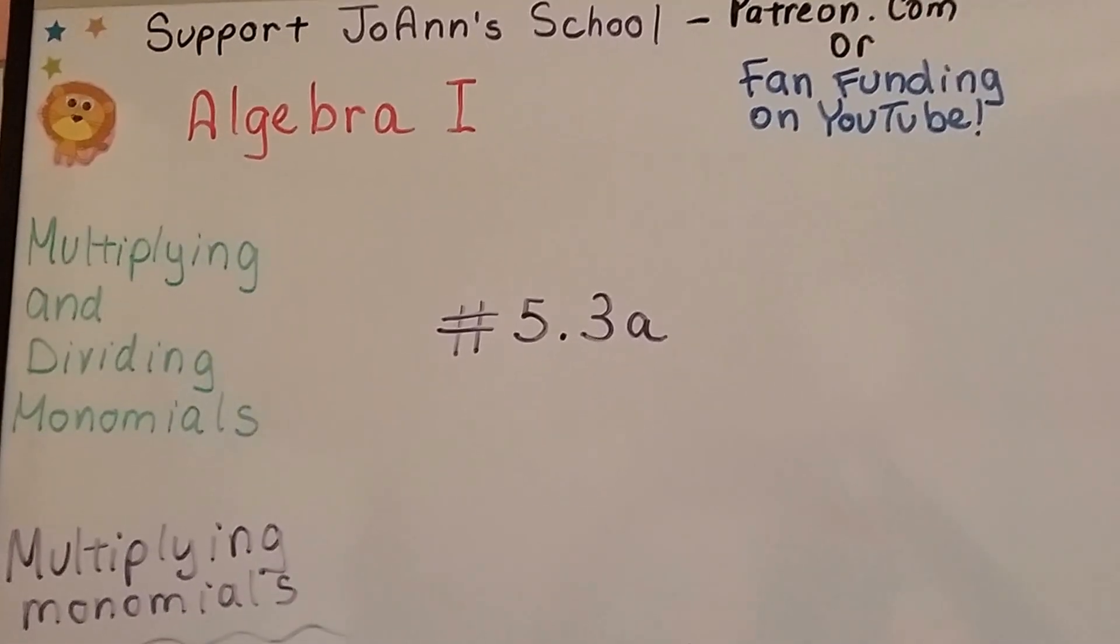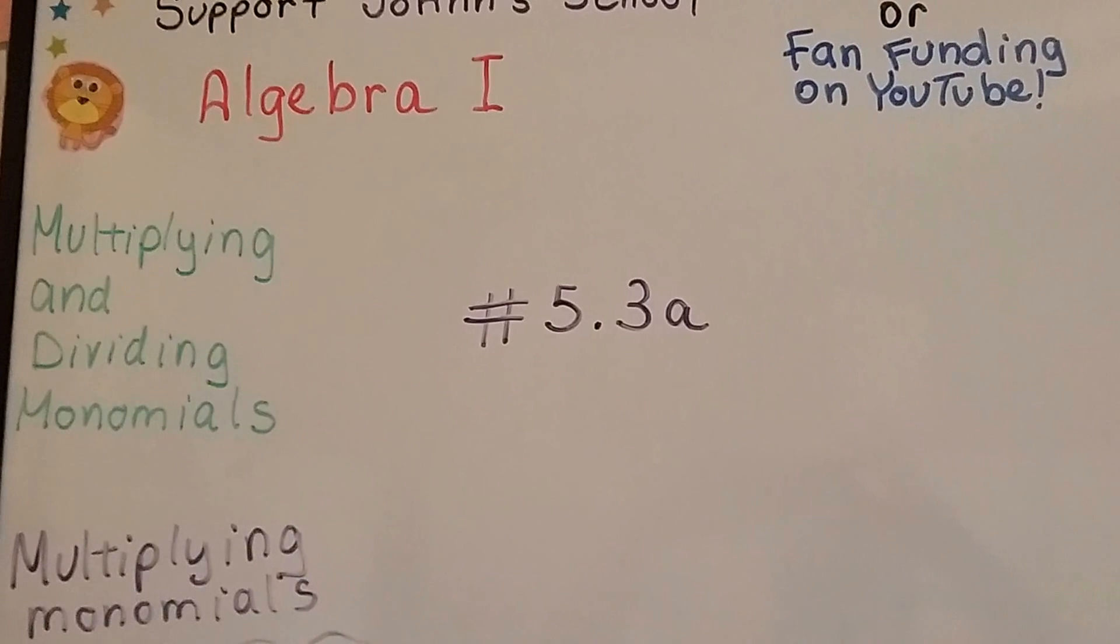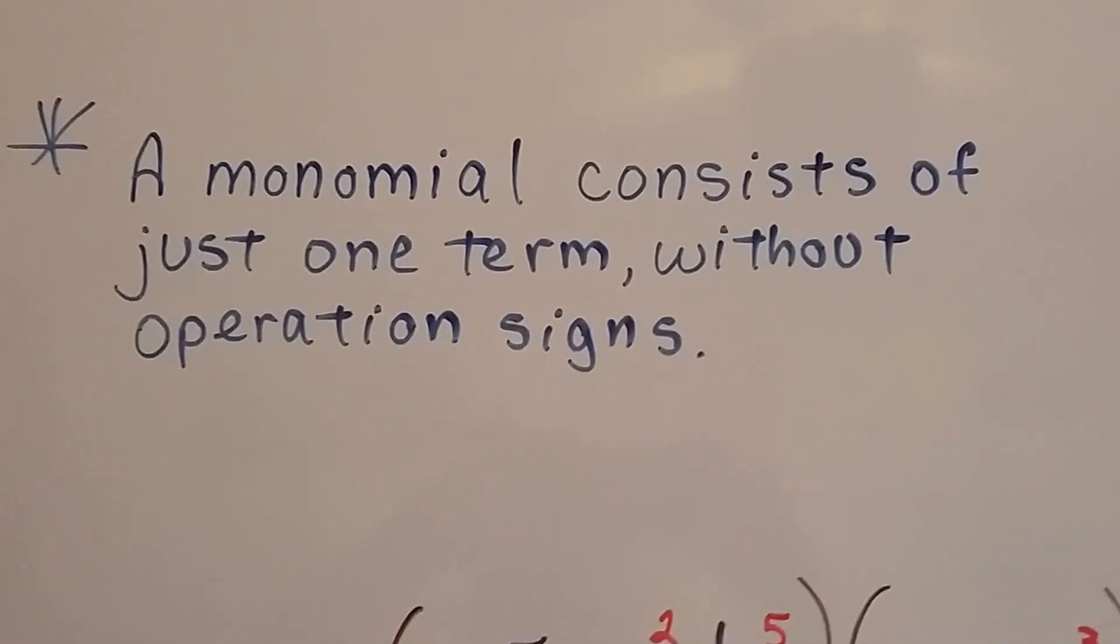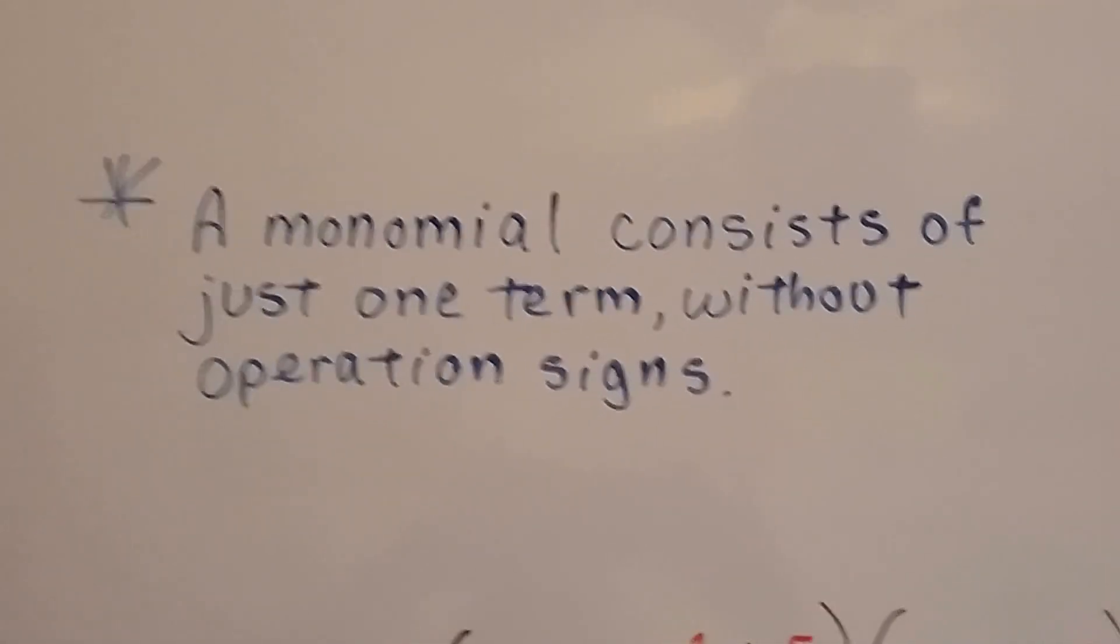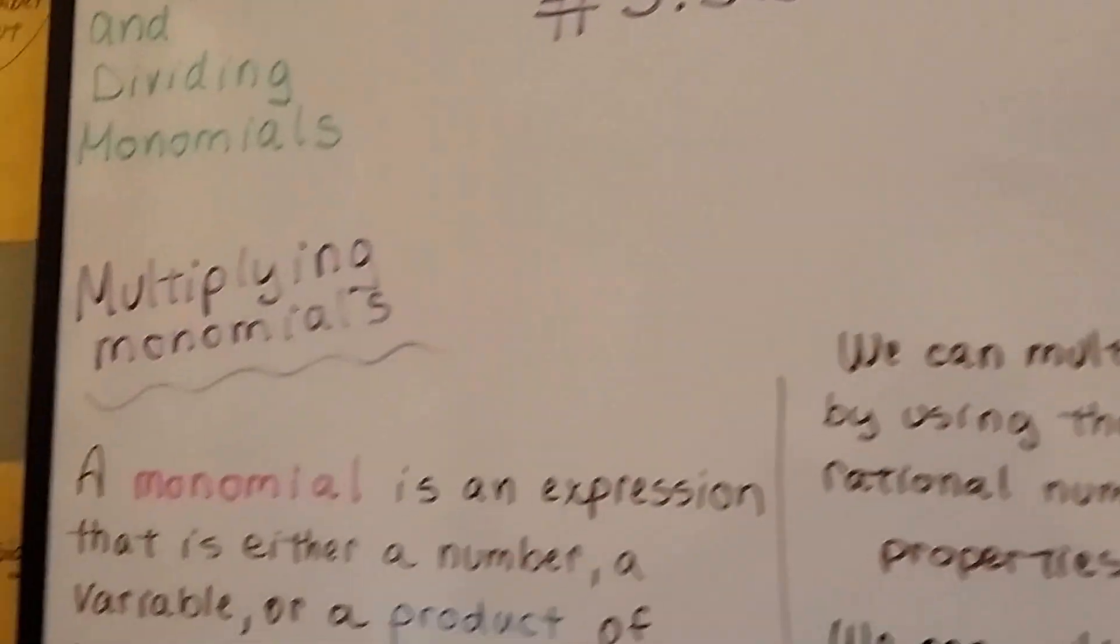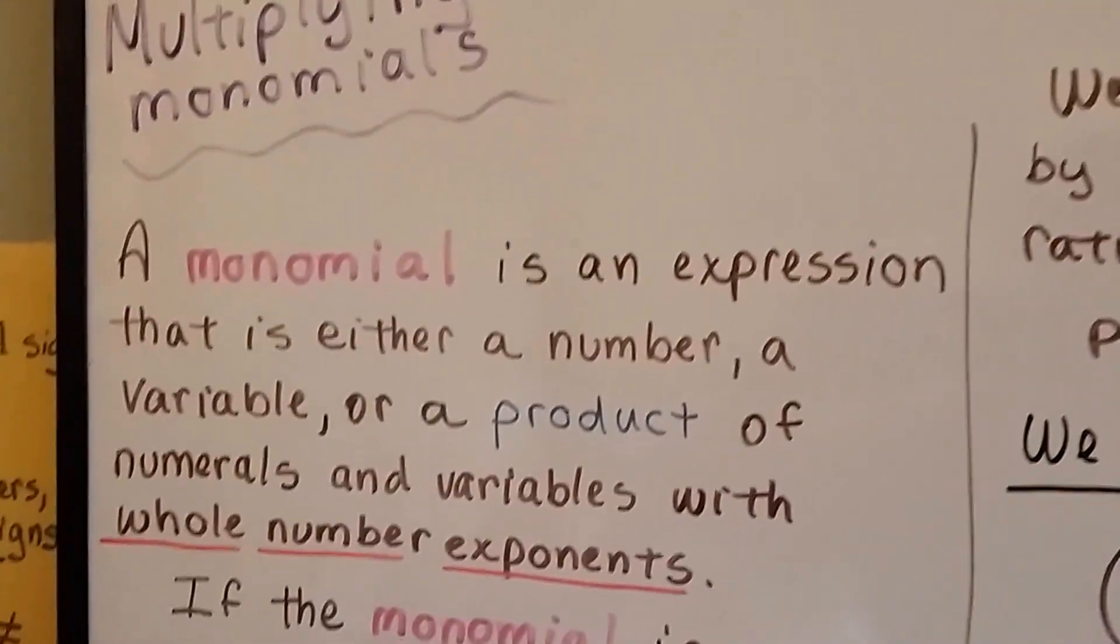Algebra 1 number 5.3a, multiplying monomials. I want you to remember a monomial consists of just one term without operation signs. No addition, no subtraction. Alright, so this is multiplying monomials.